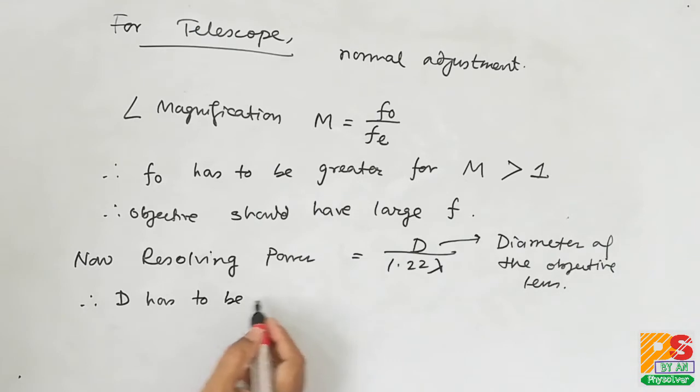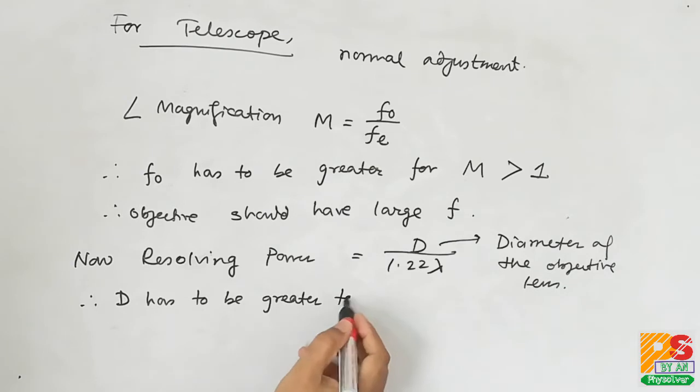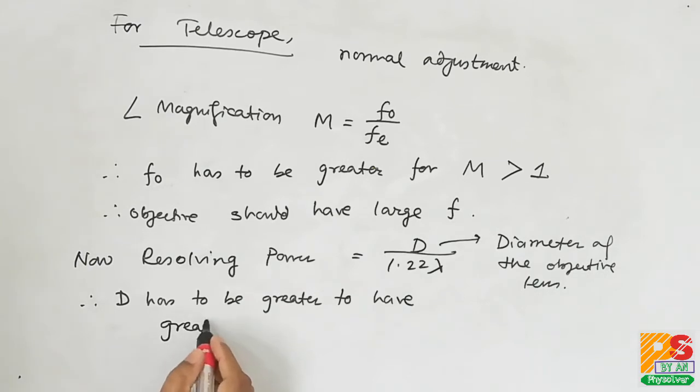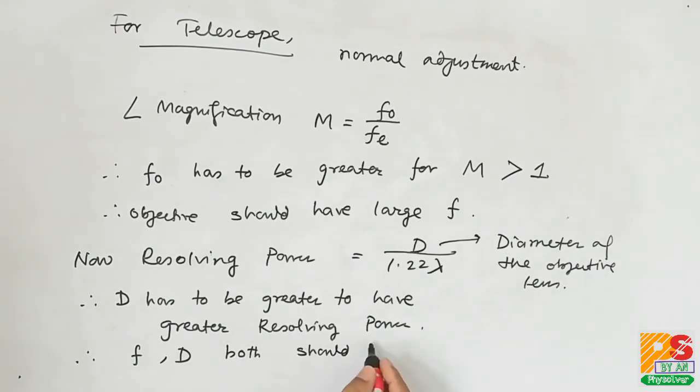Therefore, the diameter of the objective lens should be greater in order to get large resolving power. We can conclude that both F and D should be larger, and option 3 will be the correct answer.